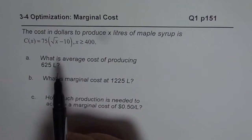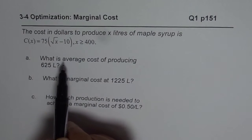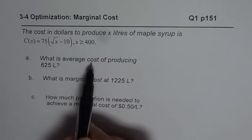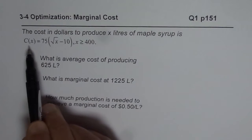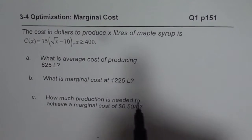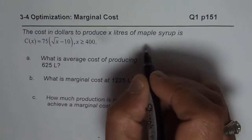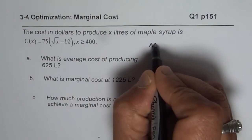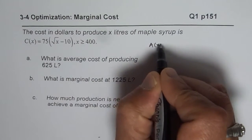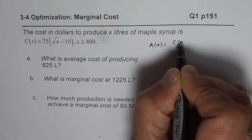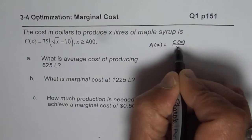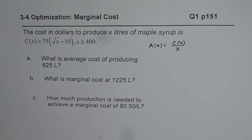The first part asks for the average cost of producing 625 liters. We are given the cost of production. Average cost is cost of production divided by the quantity produced, so it is C(x) over x — that is how average cost is defined.